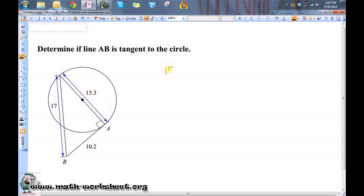Let's see if 15.3 squared, because that's one of the legs, plus 10.2 squared equals 17 squared. We're going to see if you square each of the legs and add them up, does it equal the square of the hypotenuse, or the supposed hypotenuse.